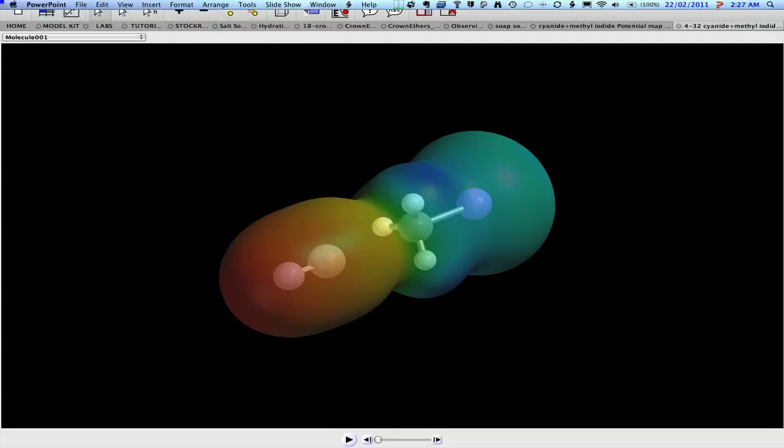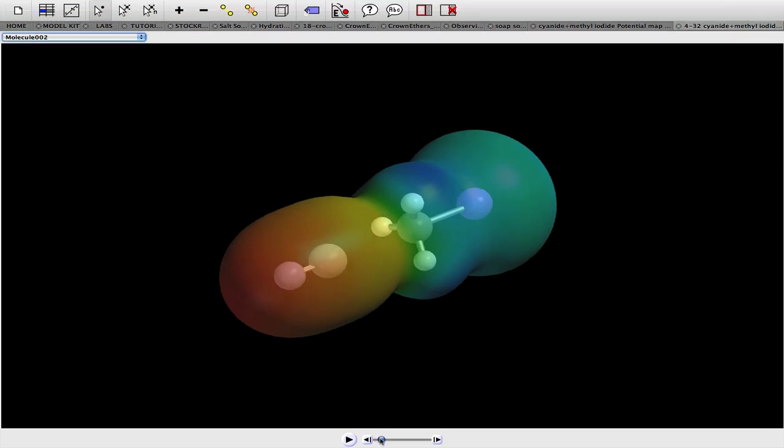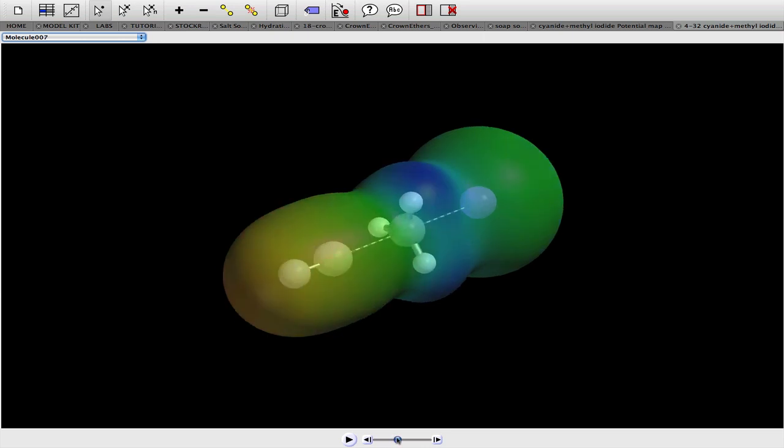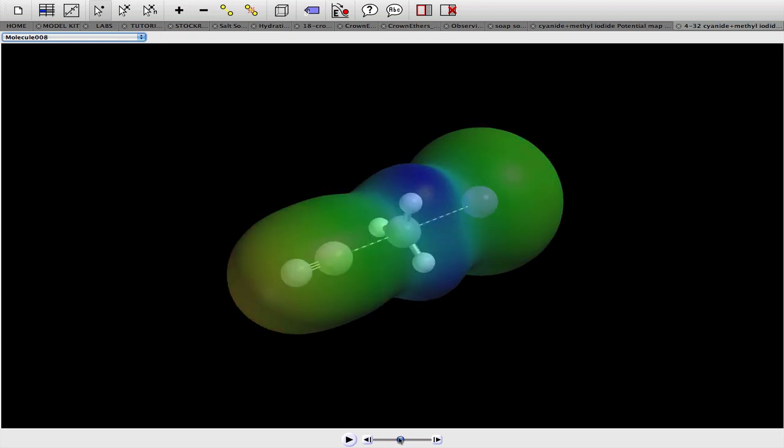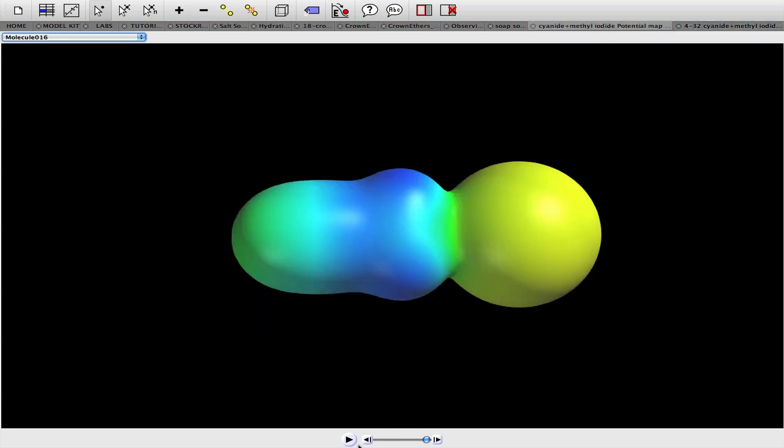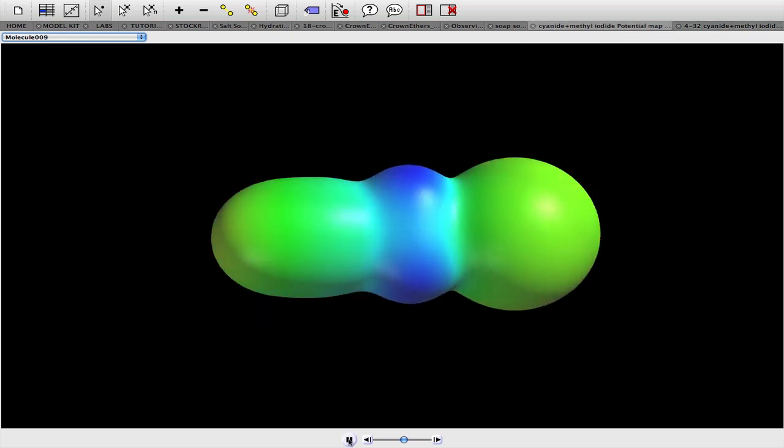Here is the actual simulation in Odyssey, and you can see the movement of electron density which can be portrayed by the color change. So the intermediate is at the halfway point. Here is another representation of the same movement.